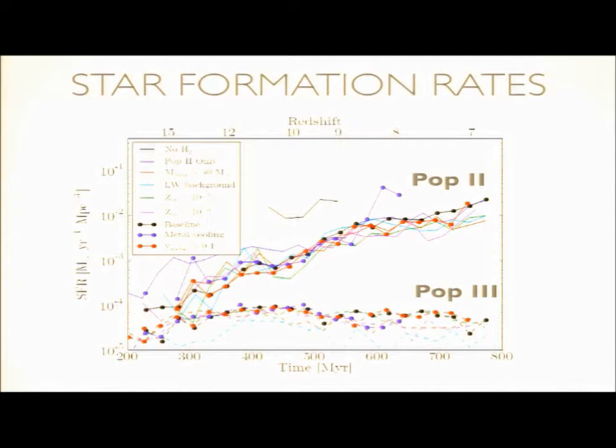I'll focus on those two simulations. Yes — when you go from Pop3 to Pop2, you change the IMF and the yields — all of the above. In the Pop3 model we're simulating one star at a time, whereas the Pop2 stars have a regular Salpeter IMF with standard photon luminosities.